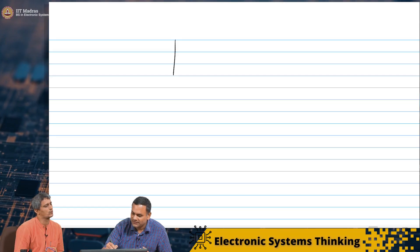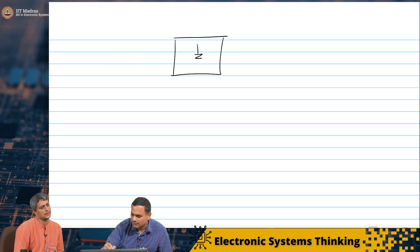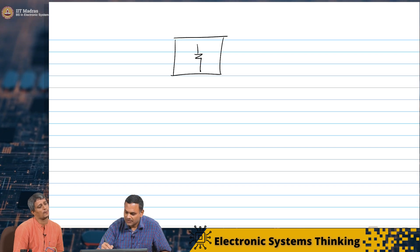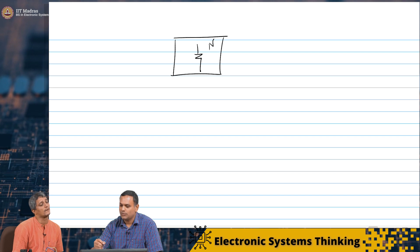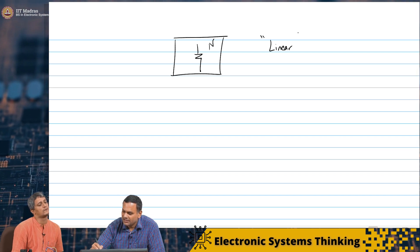Now, one last thing. We have been looking at the characteristic of the resistor, which passes through the origin. We need to confirm some things. We need to see whether, if you build a network N out of resistors, it will satisfy linearity and the superposition condition because every resistor satisfies this. So a network of resistors by definition will be linear.